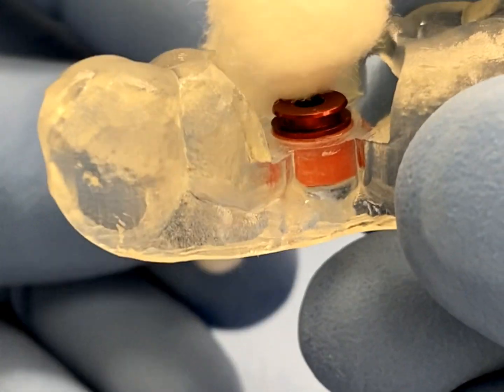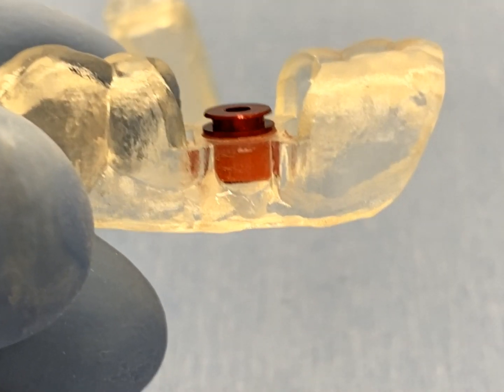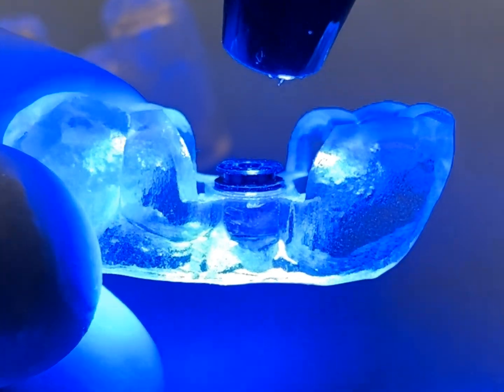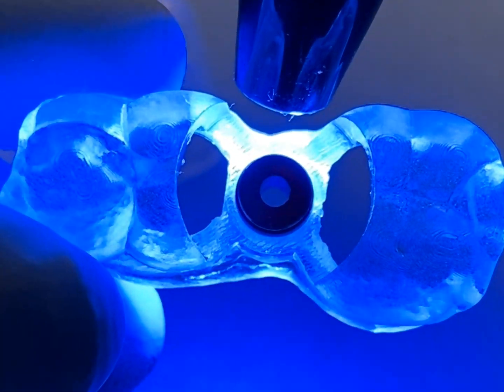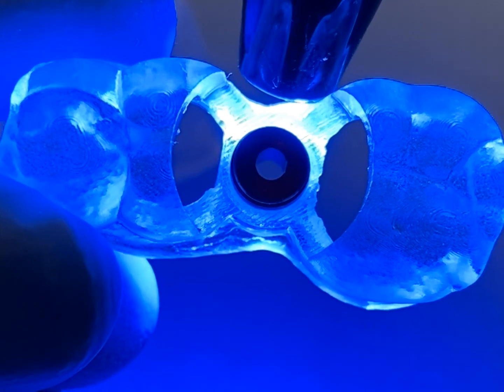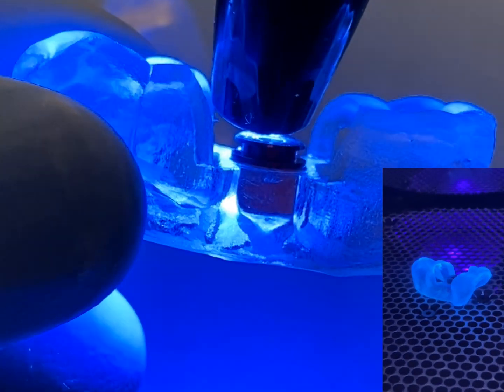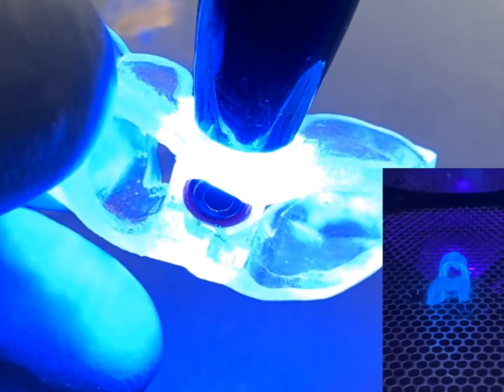If a dual cure adhesive is used, the complete set time for the adhesive will vary according to each manufacturer's specifications. If a light curable adhesive is used, simply light cure the adhesive by using a standard dental curing light or laboratory curing unit that uses light and heat to polymerize the adhesive used to bond the GRS surgical ring to the surgical guide.